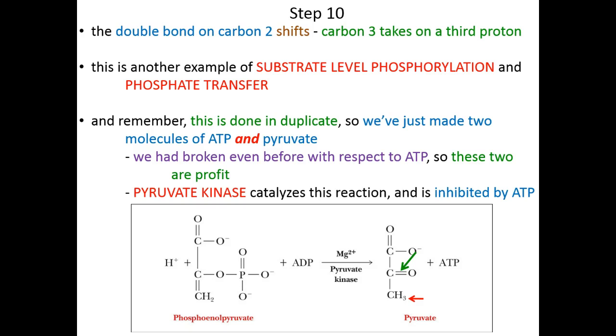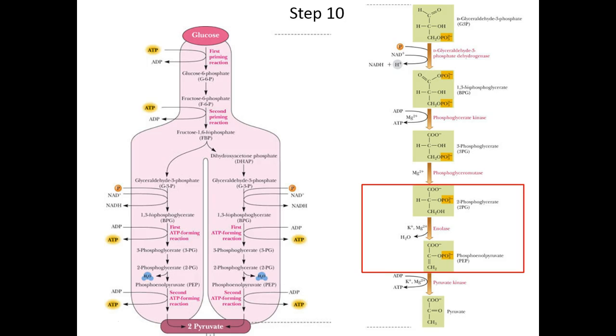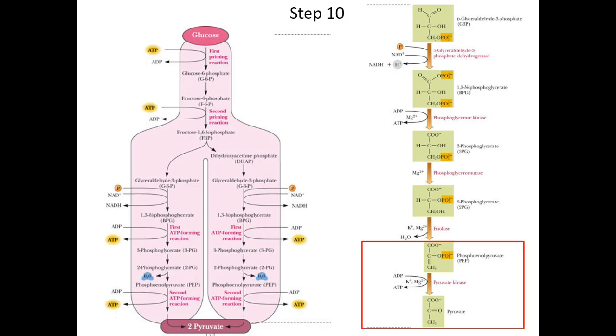The enzyme responsible for catalyzing step 10 is pyruvate kinase — another one named for the reverse reaction. Pyruvate kinase sounds like an enzyme that adds phosphate groups to pyruvate, but in fact we just removed a phosphate group to create pyruvate. So do keep in mind that this enzyme is named for the reverse reaction. Pyruvate kinase is inhibited by ATP because if we have plenty of energy on hand, we do not need to finish glycolysis. That's glycolysis in all of its glory — a 10-step process. Know this process in detail: at a minimum, know the enzyme names, and let those names lead you to the correct substrates and products.